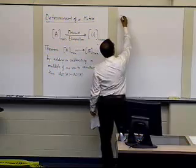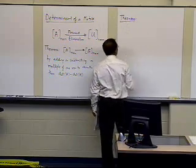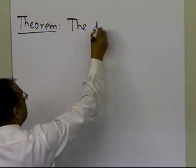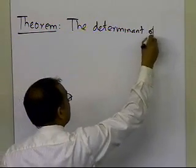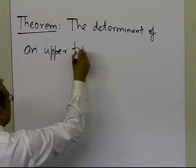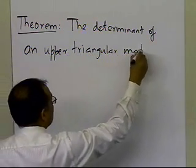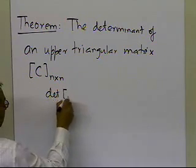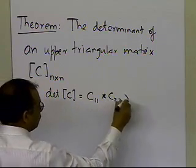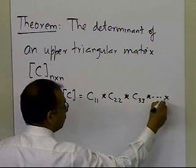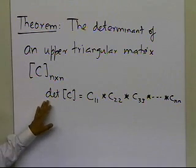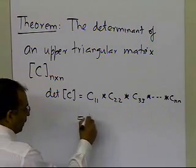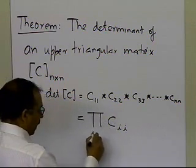The second theorem states that once we convert the coefficient matrix using multiples of one row added or subtracted from another, the determinant of an upper triangular matrix C, which is n-by-n, is simply equal to C₁₁ times C₂₂ times C₃₃, all the way up to Cₙₙ. In compact form, this is the product of C sub ii for i equal to 1 to n.